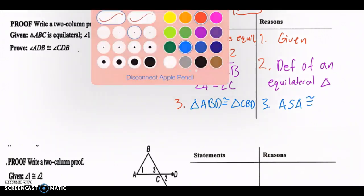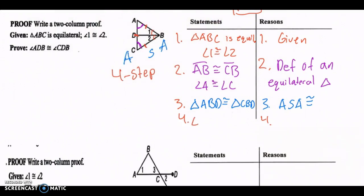Now once you have that, angle ADB is congruent to angle CDB, which is these angles right here. ADB right here is congruent to CDB. And that's because of CPCTC.